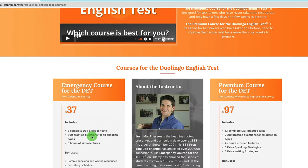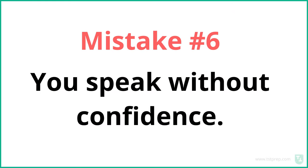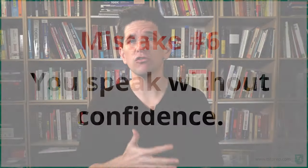Mistake number six is that you speak without confidence. This is similar to speaking like a robot, and again, it's natural — English is not your first language and you're nervous about this test. But you want to try to sound confident. You want to use your body to help you sound more confident. You don't have to actually be more confident — just do a couple of little things with your body and that'll help you become more confident automatically.